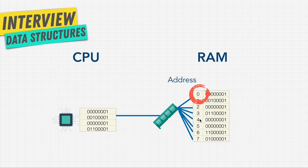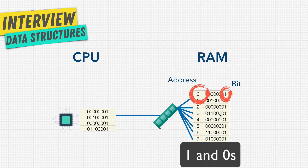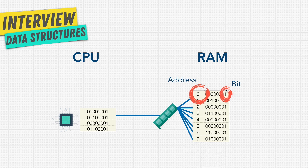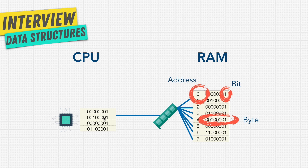Each of these shelves holds what we call eight bits. Each one of these numbers is a bit, and a bit is a tiny electrical switch that can be turned on or off — but instead of calling it on or off, we call it one or zero. Eight bits is called a byte. Each shelf has one byte of storage, and the CPU is connected to something called a memory controller, which does the actual reading and writing of this memory.